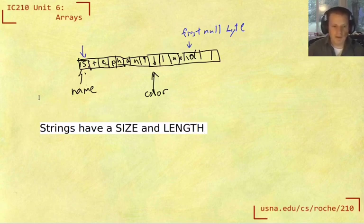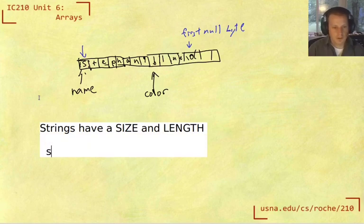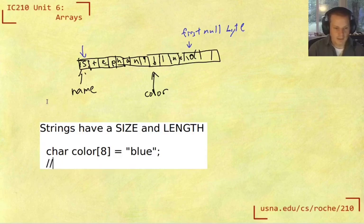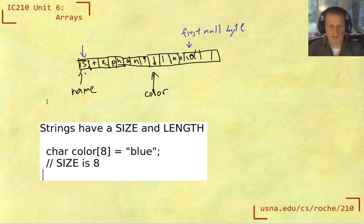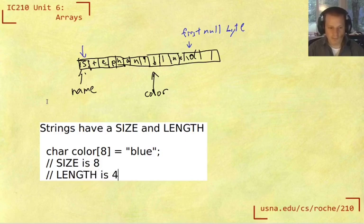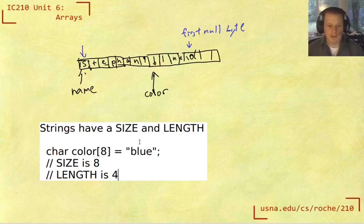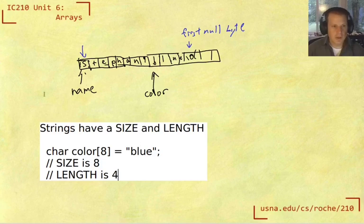So for the example of, if I say char color[8] equals blue, then in this case the size is 8. That's how many bytes in memory have been allocated, how many chars in memory have been allocated for the string. But the length is only 4. Because the length is just the number of characters until you hit the first null byte. And that's what happens if you call string length, strlen on this, it would return 4 because that's the logical length of this string.